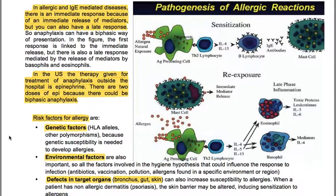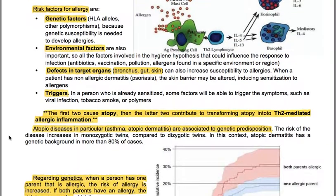When a patient has non-allergic dermatitis like psoriasis, the skin barrier may be altered, inducing sensitization to allergens. Triggers: a person who is already sensitized may have symptoms triggered by viral infection, tobacco smoke or pollutants. The risk factors — genetic factors, HLA alleles, environmental factors, defects in target organs, and triggers — can be summarized: genetic and environmental factors cause atopy, while defects in target organs and triggers transform atopy into Th2-mediated allergic inflammation.